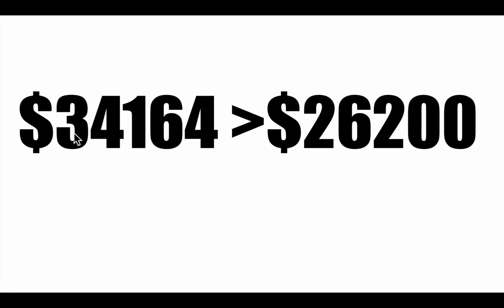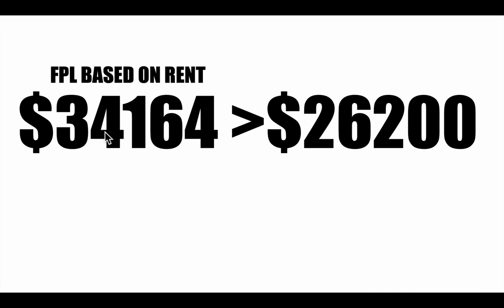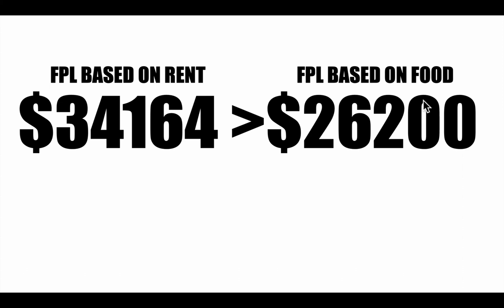On the left we have the federal poverty line based on rent; on the right, the federal poverty line based on food. Notice the rent-based number is much larger than the food-based number. This makes us wonder — why are we basing it on food, especially when food isn't really a third of people's budgets anymore? Why not base it on rent, raise that poverty line, and get more people help? That's the question we start to think about.